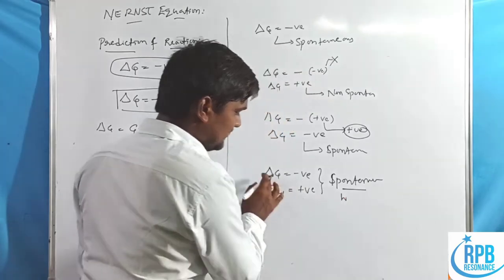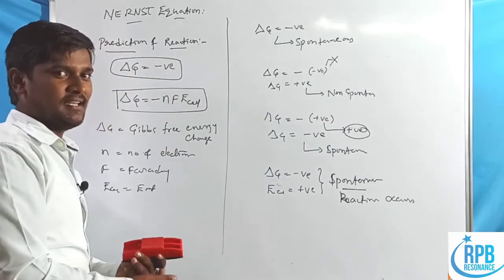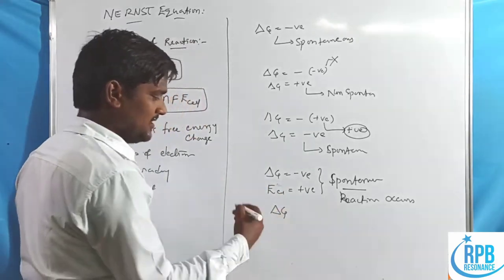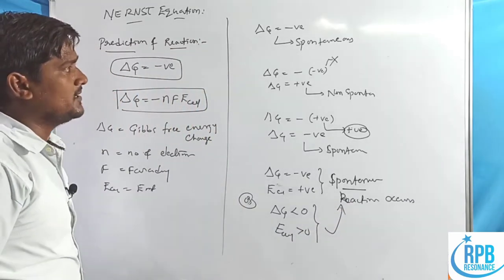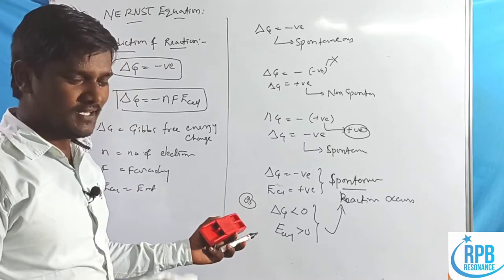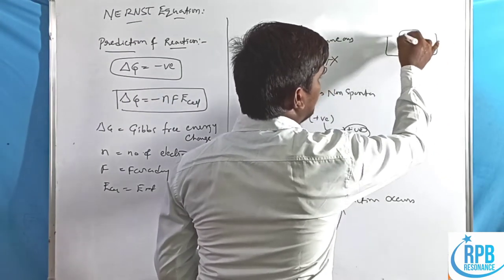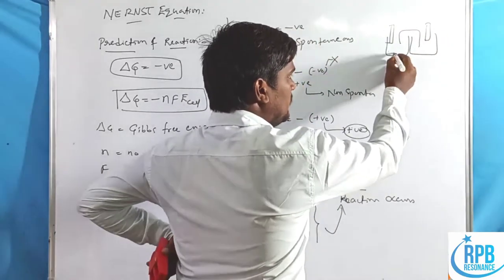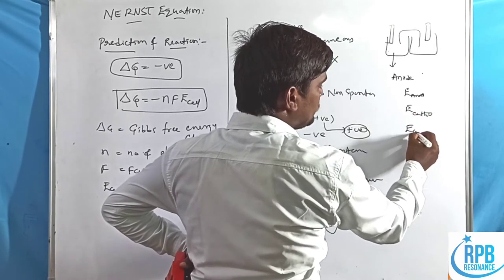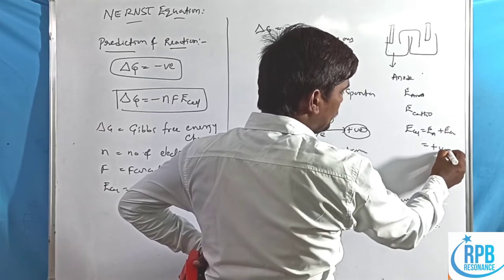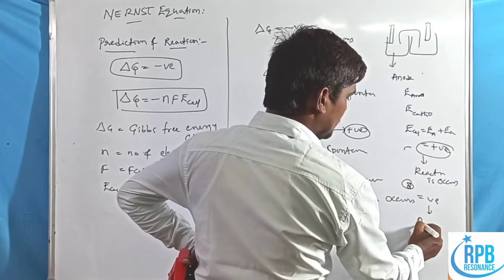When both conditions are met — ΔG negative and E°_cell positive — the reaction occurs and is feasible. If the opposite is true, the reaction is non-spontaneous. In terms of the cell, E_cell = E_anode + E_cathode; if this sum is positive, the reaction occurs. If negative, the reaction does not occur.